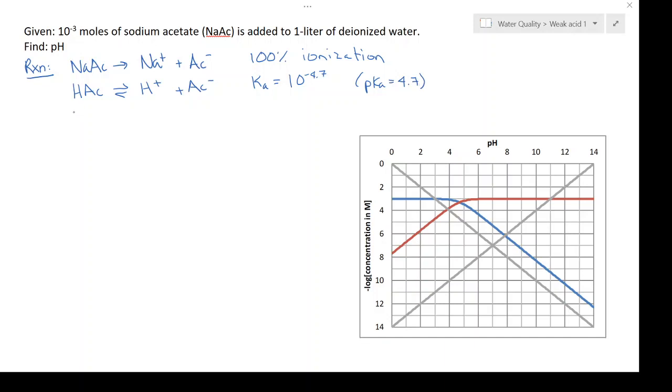And then finally I'm going to write a reaction for water. Water is also a weak acid. It dissociates and forms hydrogen and hydroxide and has an equilibrium constant K sub W of 10 to the minus 14.